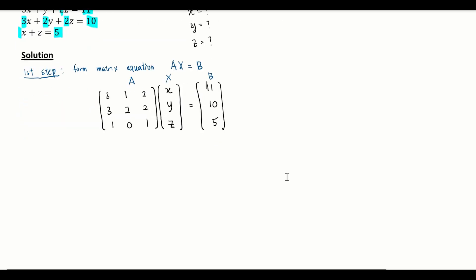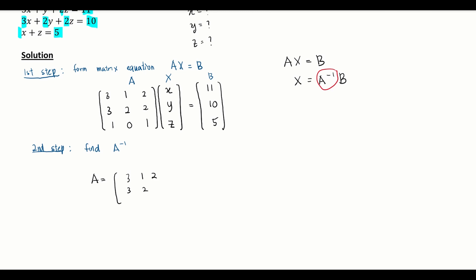The second step is to find the inverse of A. To solve AX = B using the inverse matrix method, the formula is X = A⁻¹B, so we need to find A⁻¹. We will use the adjoint method — not ERO, since Gauss-Jordan is a separate method we'll discuss later.